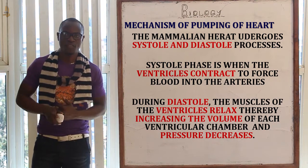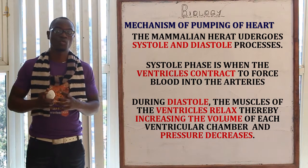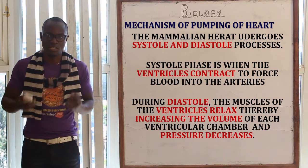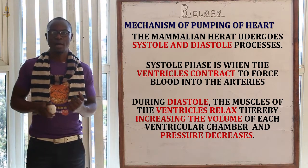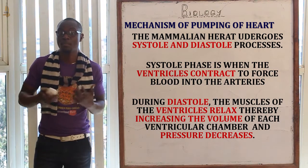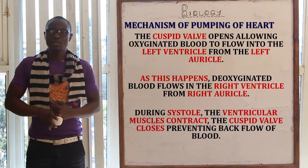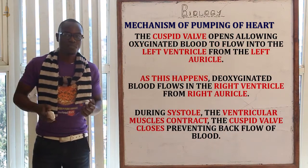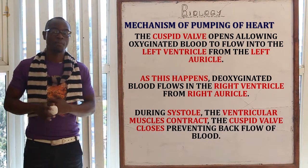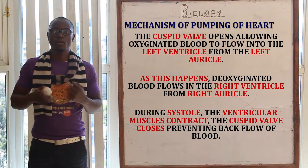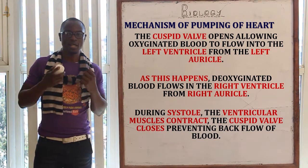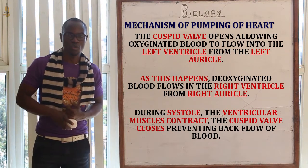During the diastole phase, the muscles of the ventricles relax, thereby increasing the volume of each ventricular chamber. As this happens, the pressure will decrease. The cuspid valves — that is the tricuspid valve or the bicuspid valve — will open, allowing oxygenated blood to flow into the left ventricle from the left auricle.